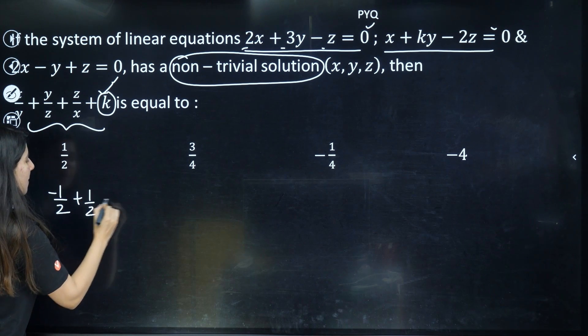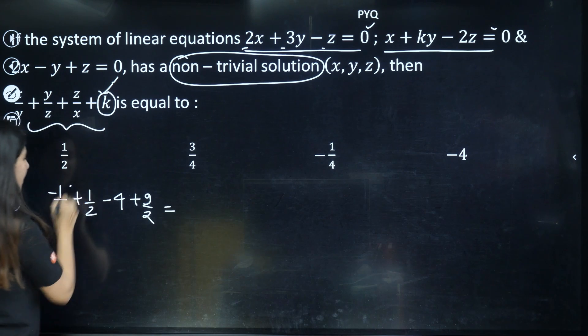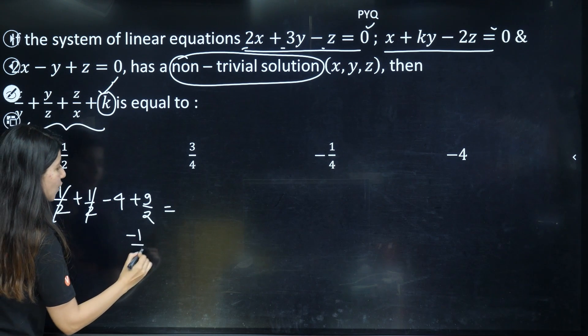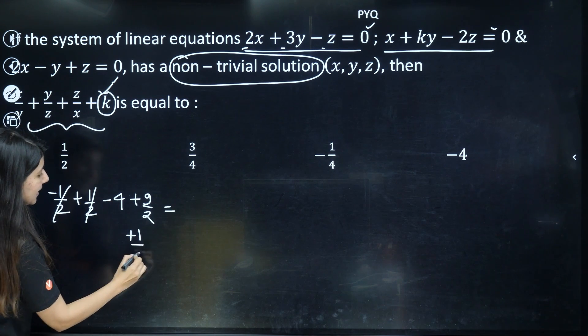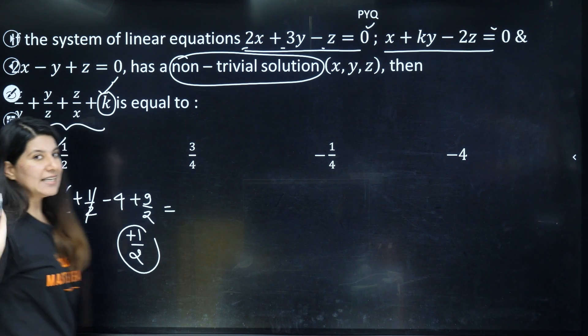So we need to figure out -1/2 + 1/2 - 4 + k, which is 9/2. These two are getting cancelled. So what is the value?